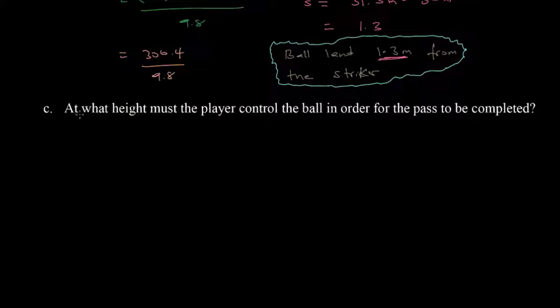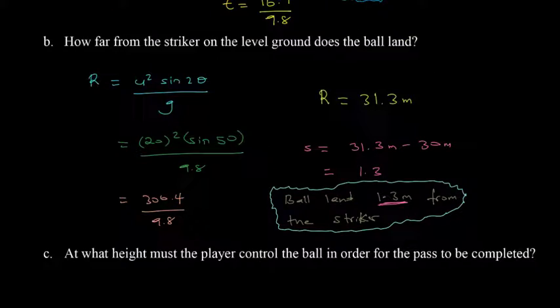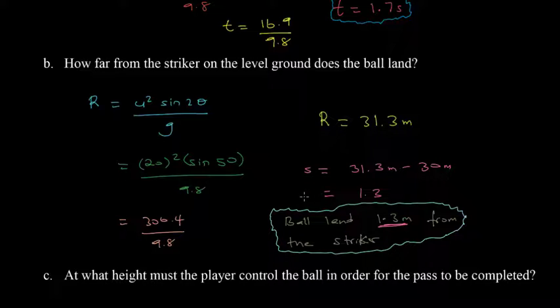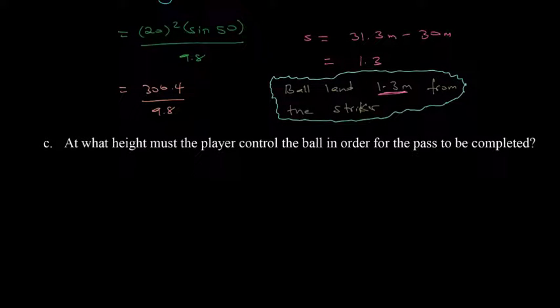Now in this question it says that at what height must the player control the ball in order for the pass to be completed? So we would have already found out the time it took, the time it will take for the ball to travel. So we found the time of flight of the ball. We also went and found the distance, in other words how far from the striker the ball will land. Now we found out that the ball lands 1.3 meters from the striker.